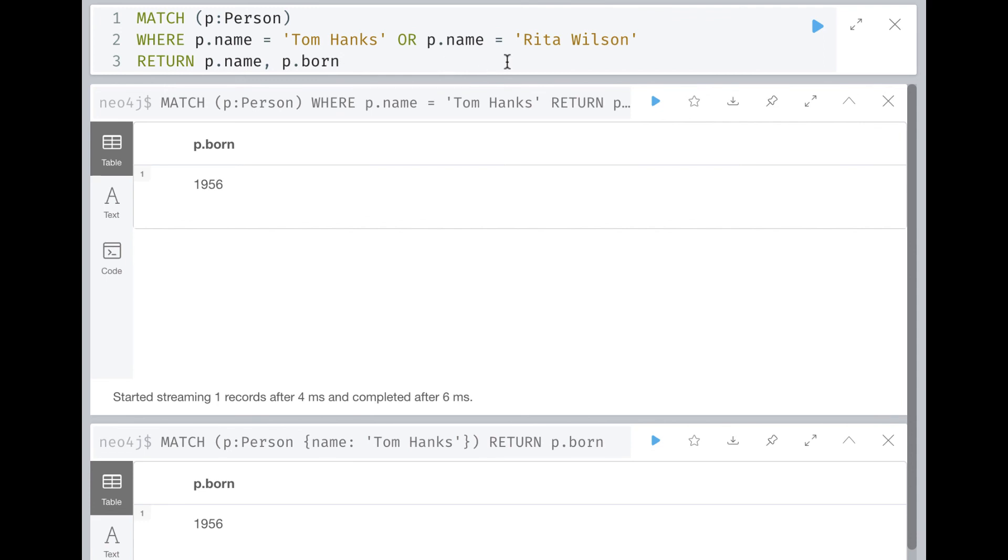For example, here we want to retrieve all person nodes that represent either Tom Hanks or Rita Wilson, and we return their values.